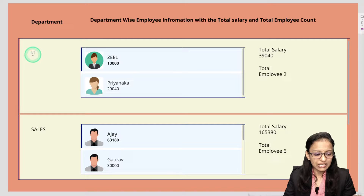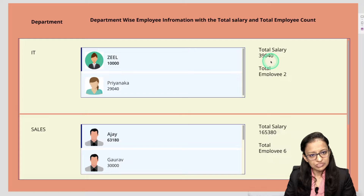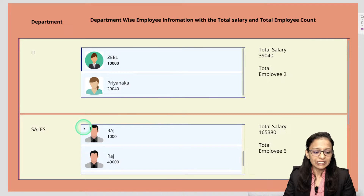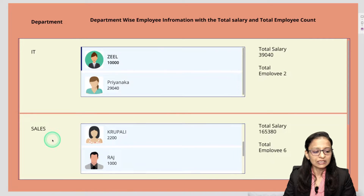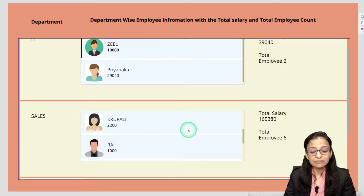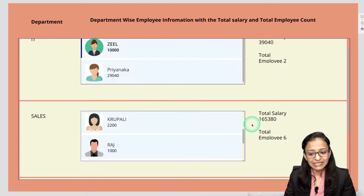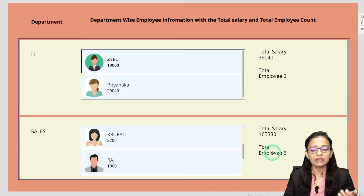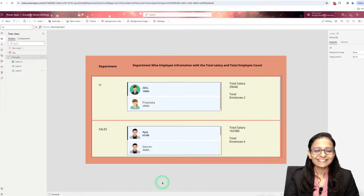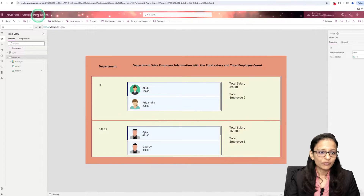For example, this is the IT department — total salary is this much, and there are two employees. The second is the sales department, with its employees listed. This is the kind of data display I want to build. So let's design the same thing as a demo.